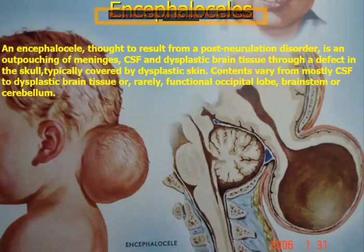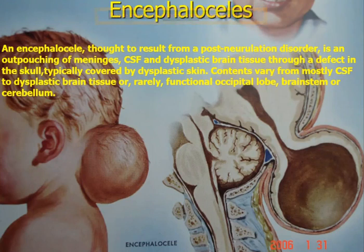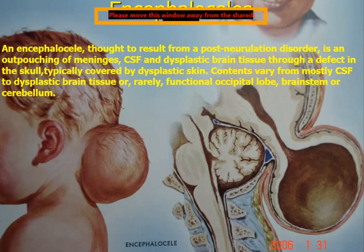Moving from spina bifida to encephalocele: another congenital CSF anomaly, it results from a post-neurulation disorder. It is an outpouring of the meninges, CSF, and dysplastic brain tissue through a defect in the skull, typically covered by dysplastic skin. Content varies from mostly CSF to dysplastic brain tissue, or rarely functional occipital tissue including brain stem or cerebellum.